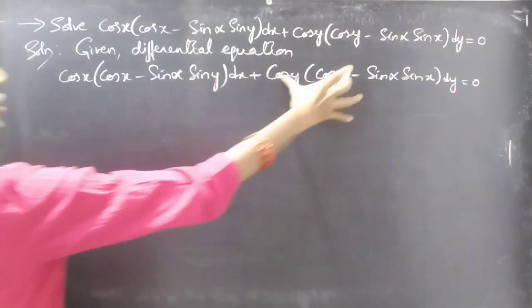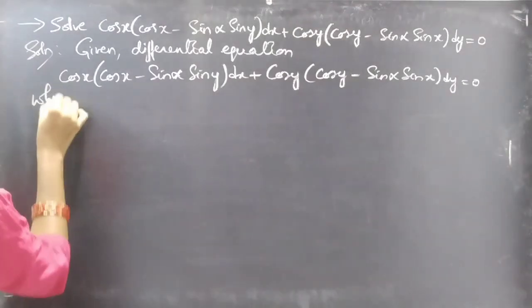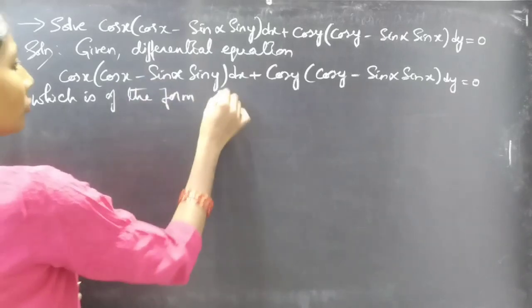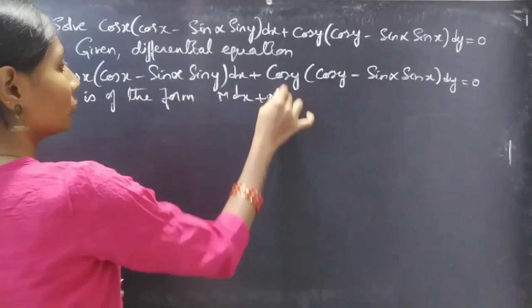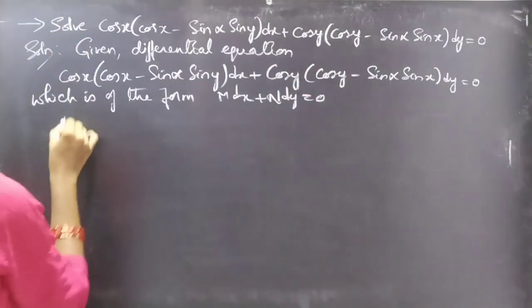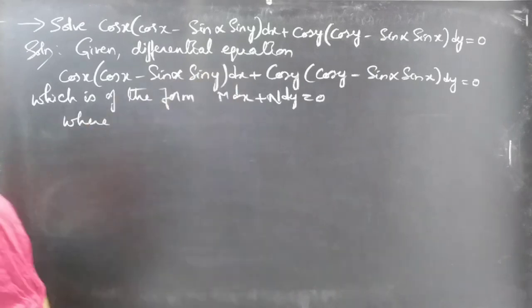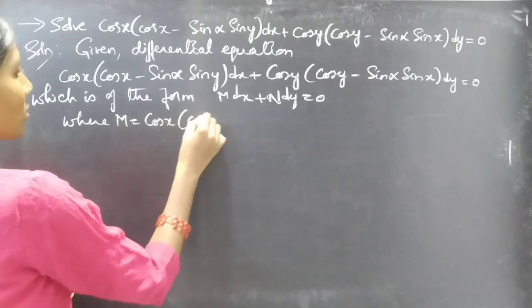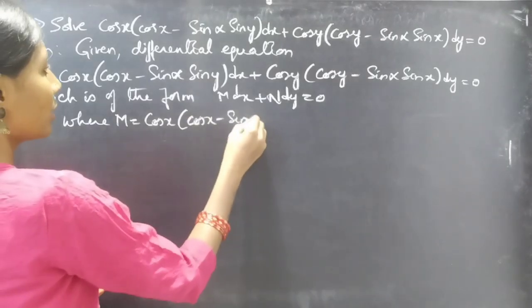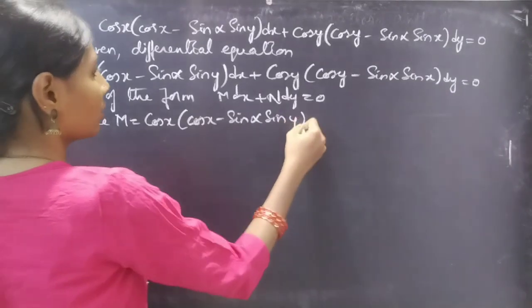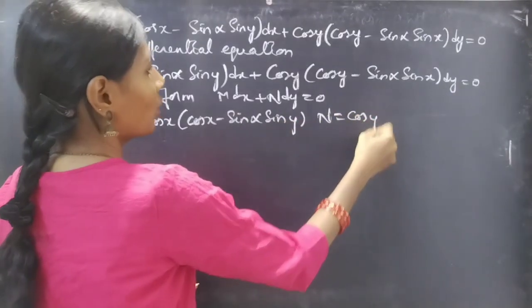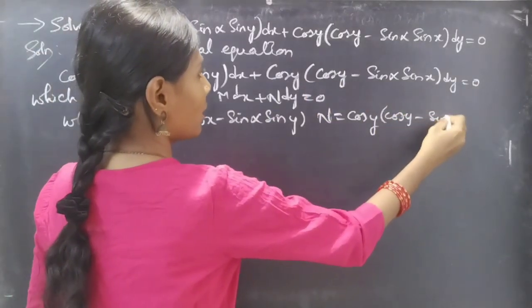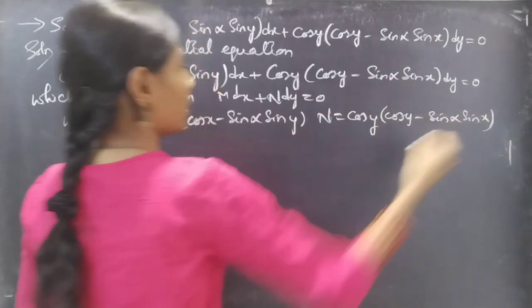This is of the form M dx + N dy = 0. By comparing, we get M and N, where M = cos(x)(cos(x) - sin(α)sin(y)) and N = cos(y)(cos(y) - sin(α)sin(x)).